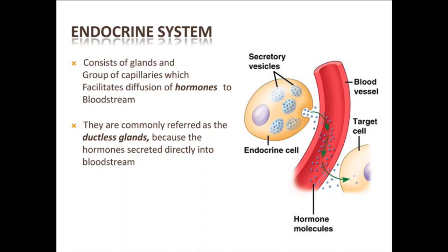The endocrine system produces hormones which regulate metabolism, growth and development, tissue function, sexual function, reproduction, sleep, and mood among other things.